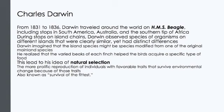His father, an eminent physician, could see no future for a naturalist and sent Charles to the University of Edinburgh to study medicine. But Charles, who was only 16 years old at the time, found medical school boring and distasteful. He left Edinburgh without a degree and then enrolled at Christ College at Cambridge University, intending to become a minister. Darwin received his B.A. degree, which included courses in biology, in 1831.